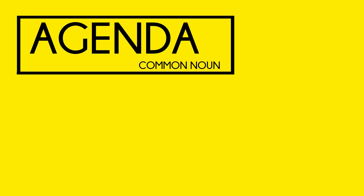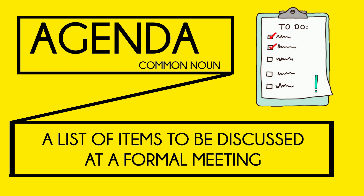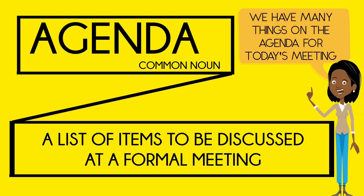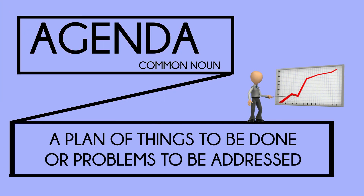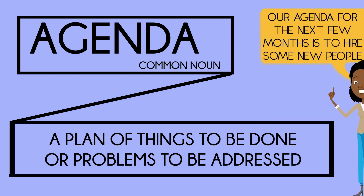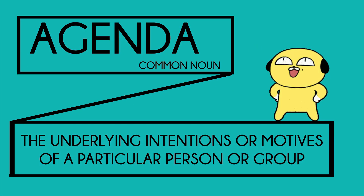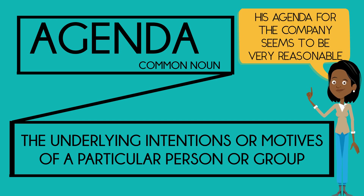It's time to move on to our next word which is 'agenda', a common noun with a few different meanings. Our first definition is a list of items to be discussed at a formal meeting — an actual physical list. For example: we have many things on the agenda for today's meeting. Our next definition is a plan of things to be done or problems to be addressed, more like a general plan for the short to medium term future. For example: our agenda for the next few months is to hire some new people. Our final definition is the underlying intentions or motives of a particular person or group. Example: his agenda for the company seems to be very reasonable.